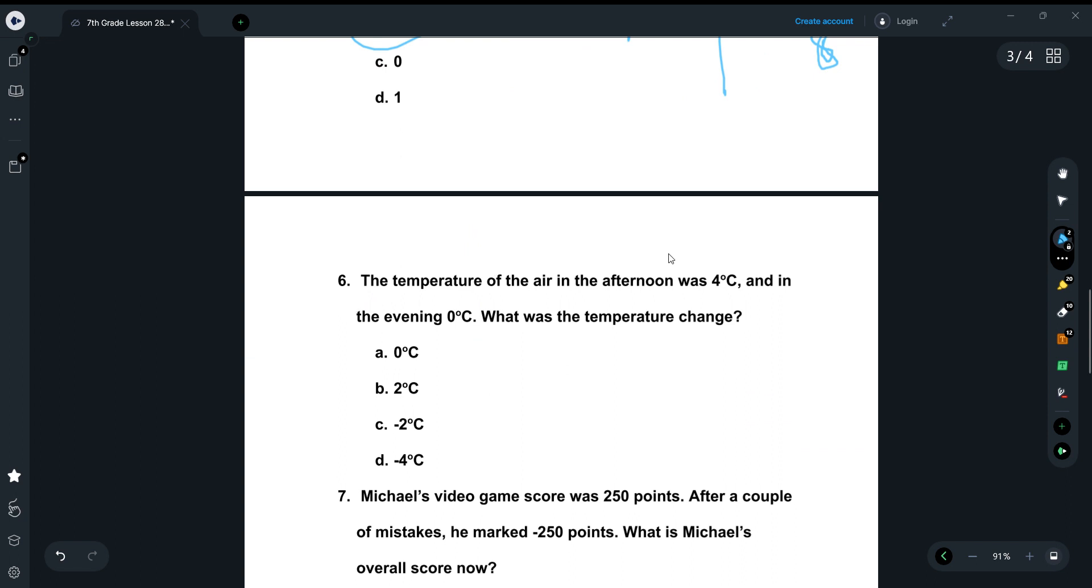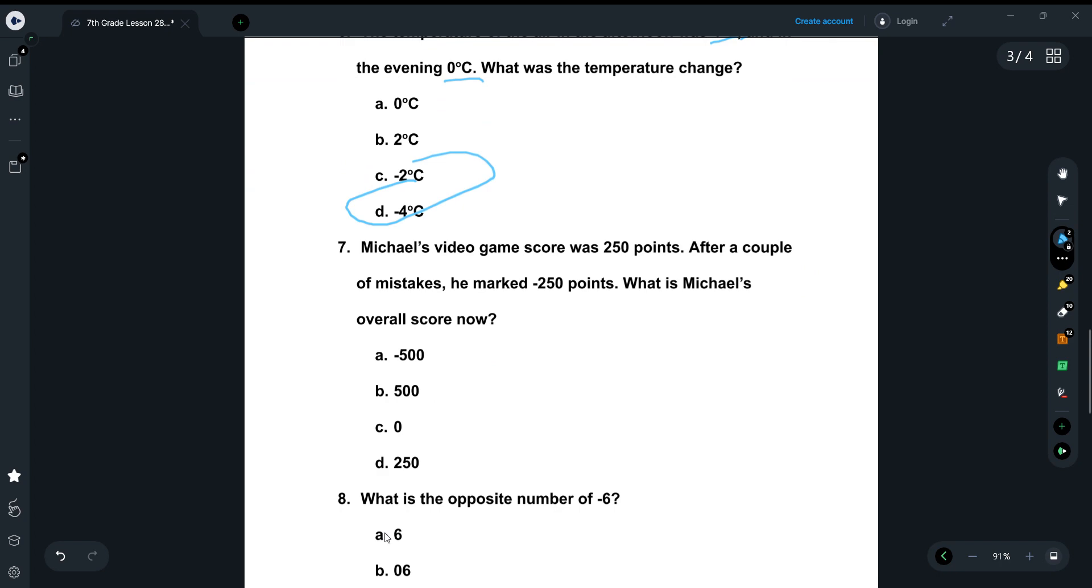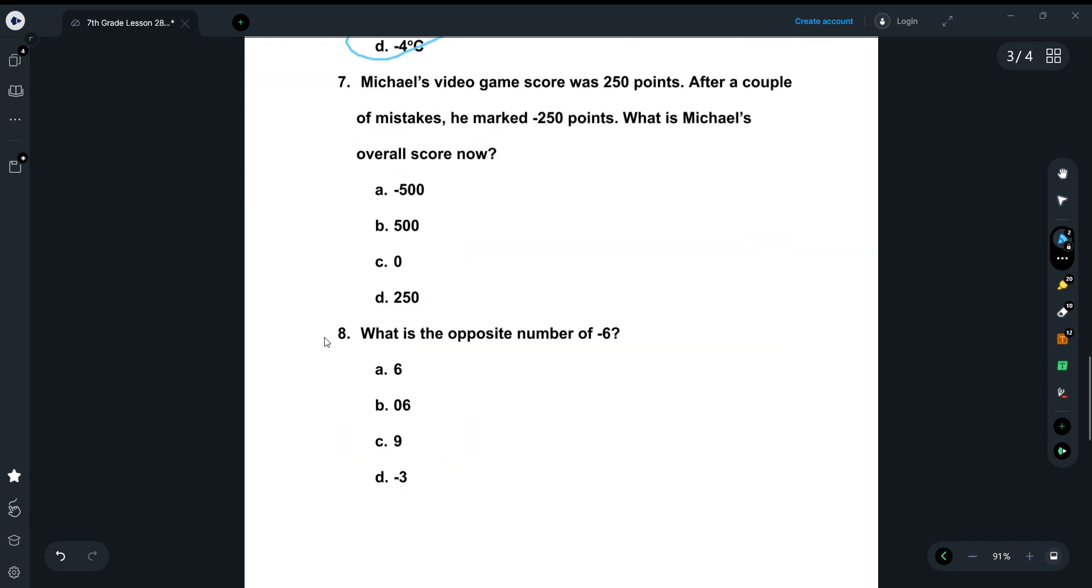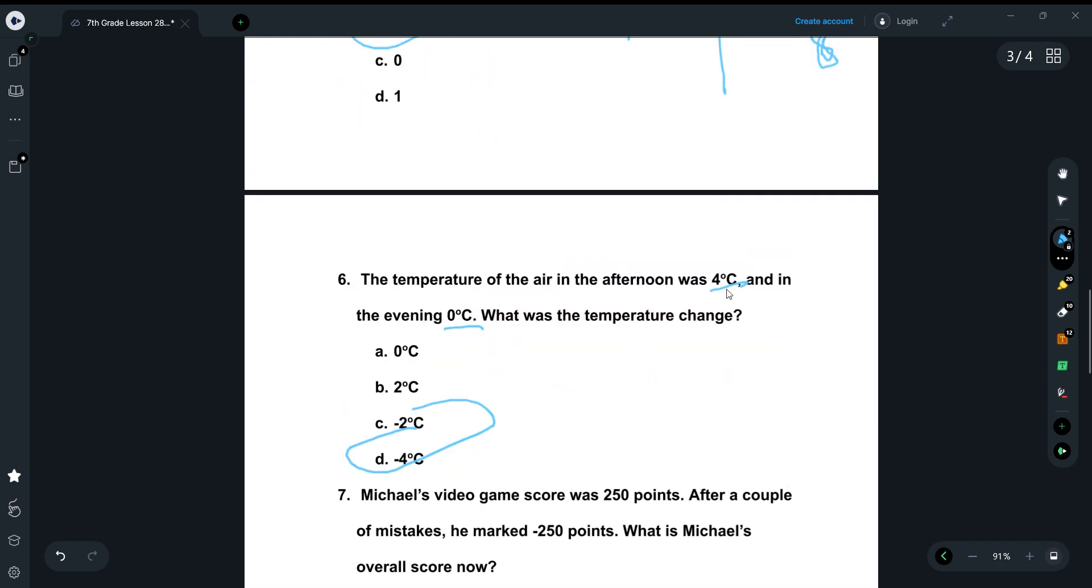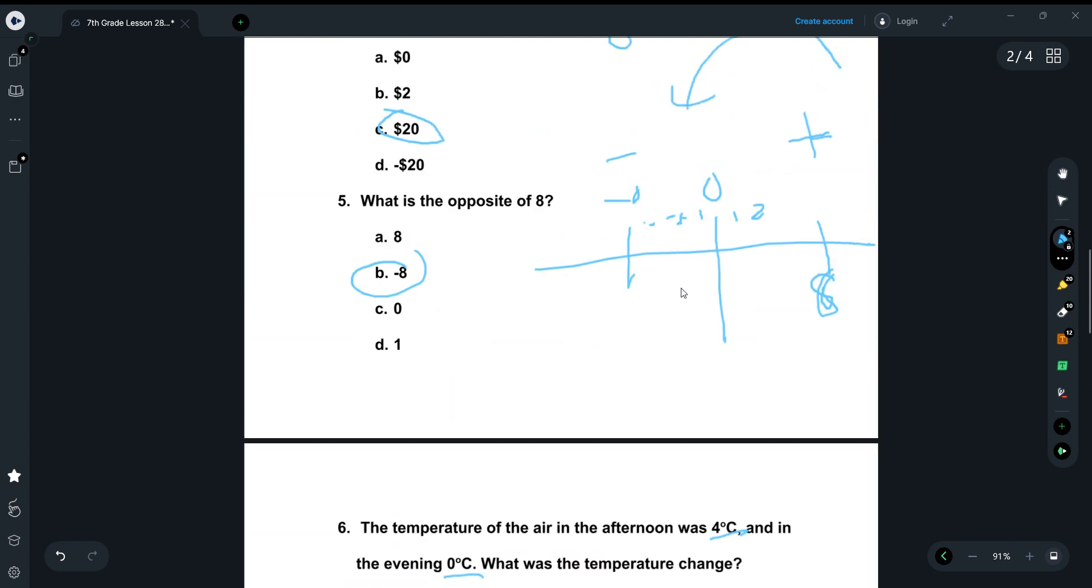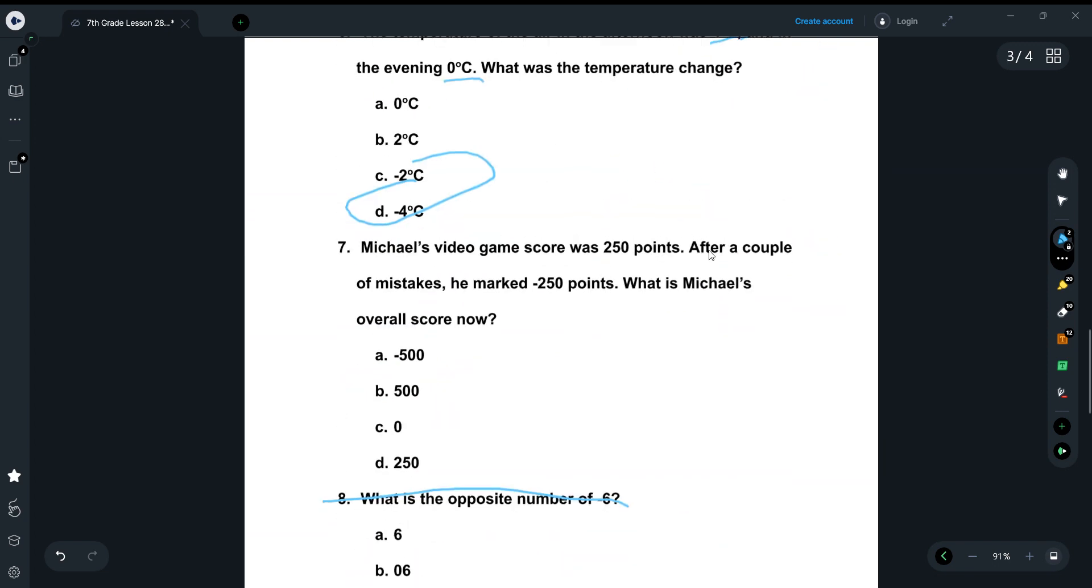Okay. Temperature, number 6. The temperature of the air in the afternoon was 4 degrees Celsius, and in the evening it was 0 degrees Celsius. What was the temperature change? Very simple. What's, how did it go from here to here? It went down 4 degrees, right? So then in order to show that, you just put negative 4 degrees, negative 4 degrees Celsius. Number 8 is the same as number 5. I don't think that needs to be explained that much.